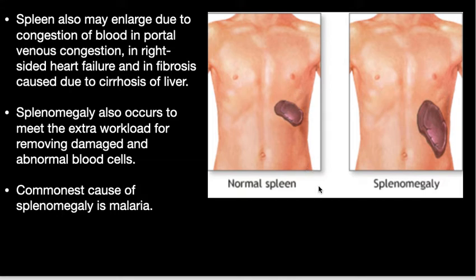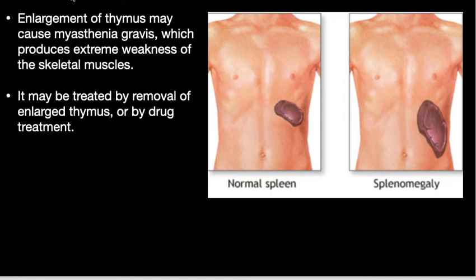Splenomegaly also occurs to meet the extra workload of removing damaged and abnormal blood cells. The commonest cause of splenomegaly is malaria. Enlargement of the thymus may cause myasthenia gravis, which produces extreme weakness of skeletal muscle; it may be treated by removal of the enlarged thymus or by drug treatment. That's all about the lymphatic system.